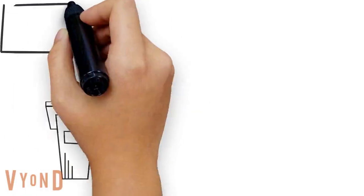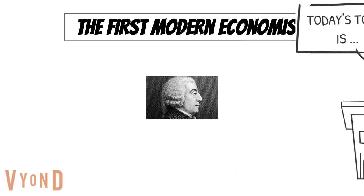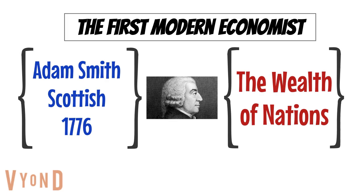Now we need to talk about what classical economics really is. The key to understanding this is Adam Smith. He wrote a book published in 1776 — it actually took him 12 years to write. We call it The Wealth of Nations. It's the tale of change in economics. He's writing as the Industrial Revolution is starting, and the world is changing from agriculture to an industrial world with factories and labor.